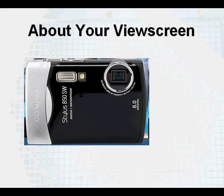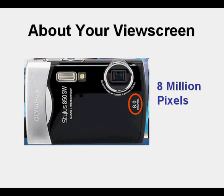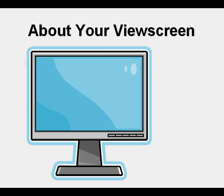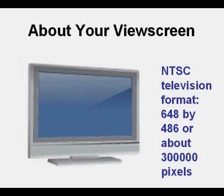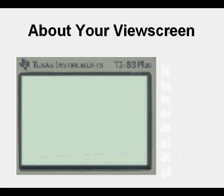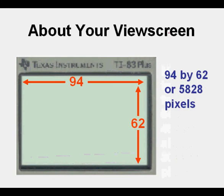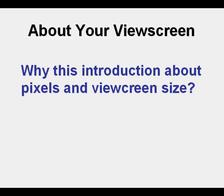This is an image of my digital camera. As you see highlighted here, it has 8.0 megapixels, or 8 million pixels. A computer monitor has 1280x1024 resolution, or about 1.3 million pixels. Television in NTSC format is 648x486, or about 300,000 pixels. Your calculator view screen, by contrast, is 94 pixels wide by 62 pixels high, or about 5,828 pixels total.